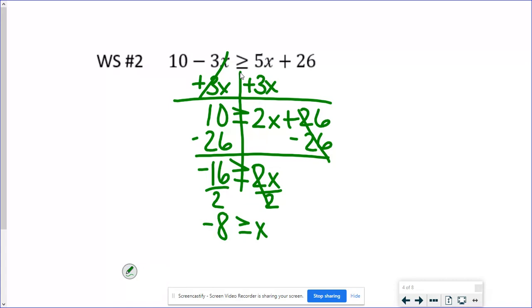Now, to finish this up, I would want the x first. I would want the negative 8 over here. And then notice that the alligator is trying to eat the negative 8. Should still be trying to eat the negative 8.